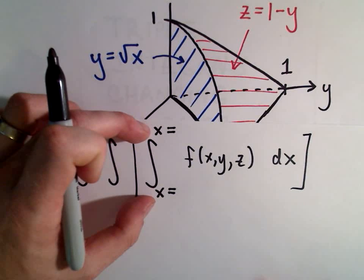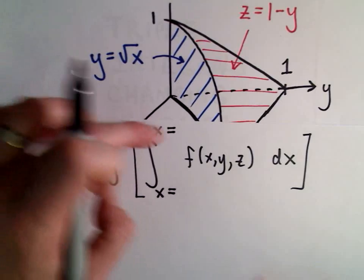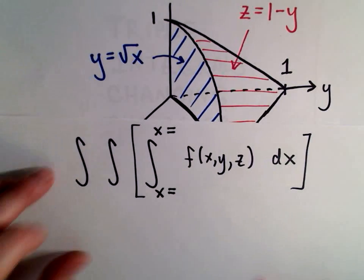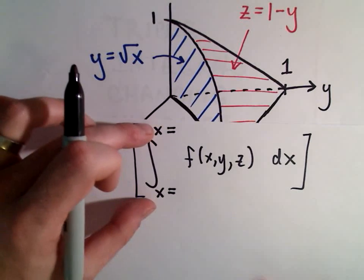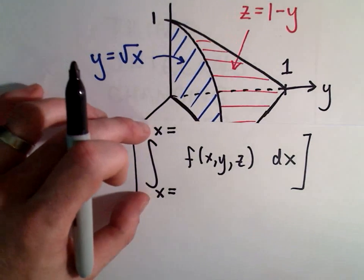And again, typically when you see these written down, you don't see the little x equals x equals. They'll just write the surfaces. And I'll do that in a second, but I always like to do this. It helps remind me of who needed to be isolated.